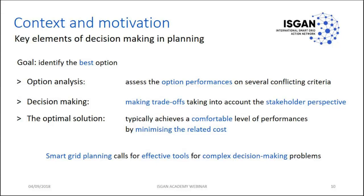In SmartGrid, unlike in a single company where you know exactly who the stakeholders are, the stakeholders are many: society, many companies, citizens, politicians, governments, and more — each with different goals. We have to find a reasonable compromise to identify the best option. We conclude that under the umbrella of SmartGrid, we need effective tools for complex decision-making problems in order to identify where it is better to allocate resources.